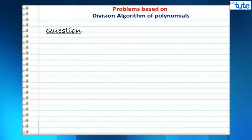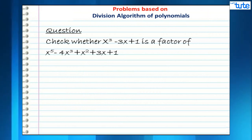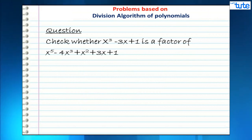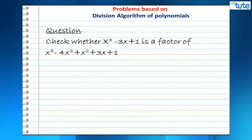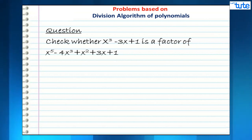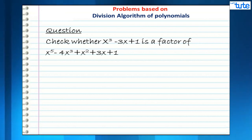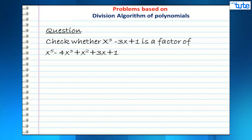Let's move on to the next question: check whether x³ - 3x + 1 is a factor of x⁵ - 4x³ + x² + 3x + 1. Note that if a polynomial is a factor of another polynomial, when we divide the larger by the smaller, the remainder should always be 0. So we divide by long division and check if the remainder is 0.